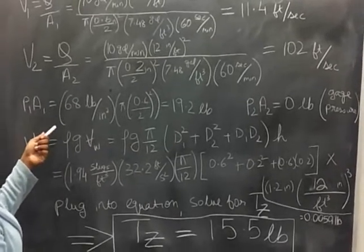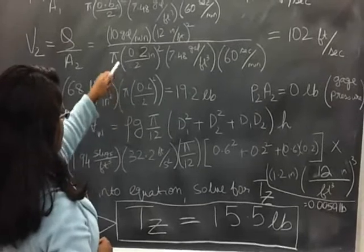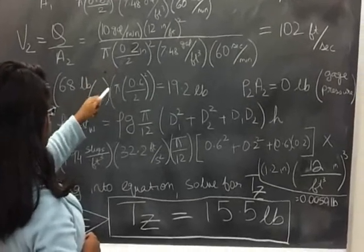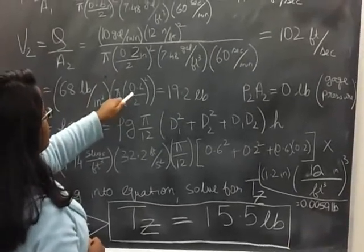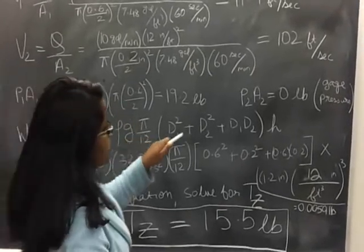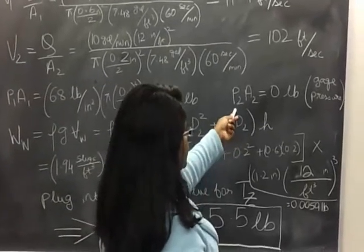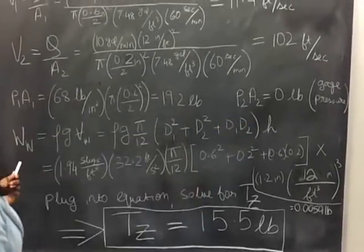Then we did P1 times A1. Pressure was 68 pounds per square inch. Multiply that by the area, which is the same as before. You use 0.6 because that's what the first diameter was. We got 19.2 pounds. Then for P2 times A2, it's actually 0 because pressure 2 is 0 as it's gauge pressure.